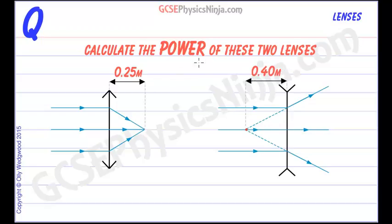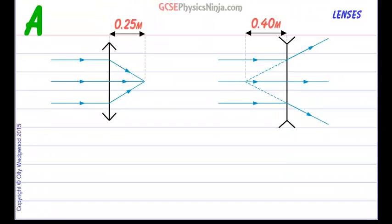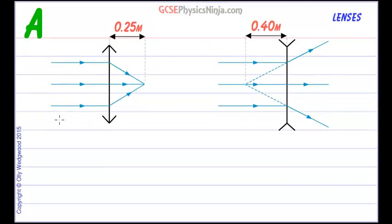So let's use an equation to calculate the power of these two lenses. First off we're going to just do a little list of data. So let's first of all say that our focal length is 0.25 meters, we're in the correct units, it's not centimeters or millimeters.